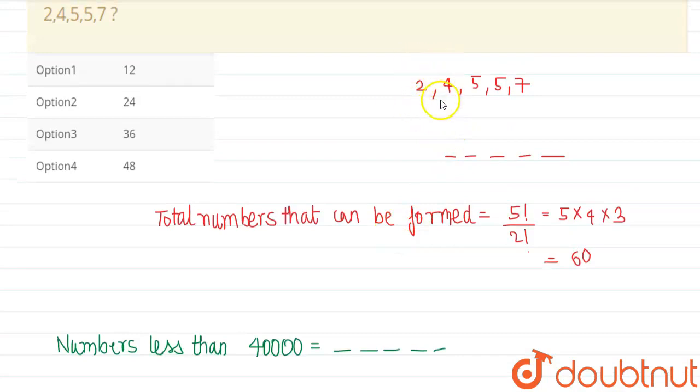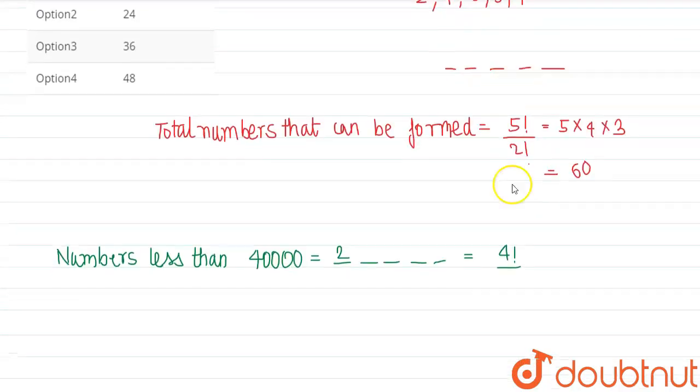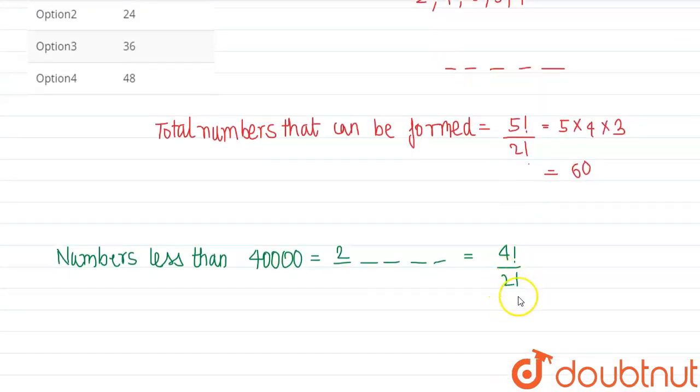So if this starts with the digit 2, the rest of the four places can be filled in 4 factorial ways. But the two 5s are also there, so it must be divided by 2 factorial ways. So this will be 4 into 3, that is 12. So these are the numbers that are less than 40,000.